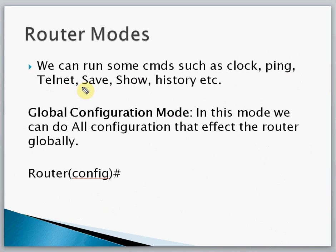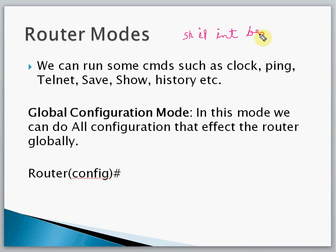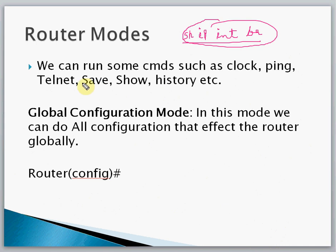In Privilege Mode, one of the most important commands is 'show ip interface brief' (abbreviated as 'show ip int'). This command shows all interfaces, whatever IP is assigned, and whether the port is up or down.